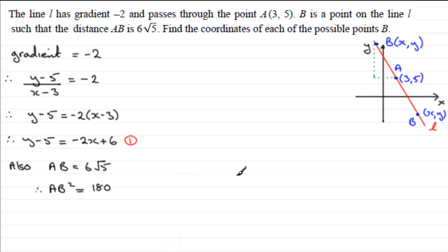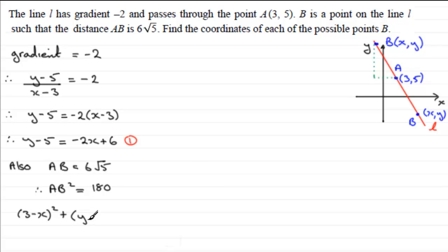To get AB squared using Pythagoras' theorem, we have AB squared equals (3 minus x) all squared, plus (y minus 5) all squared — and because we're squaring it, it doesn't matter if you write 5 minus y. So we have (3 minus x) all squared plus (y minus 5) all squared equals 180. This is equation 2.